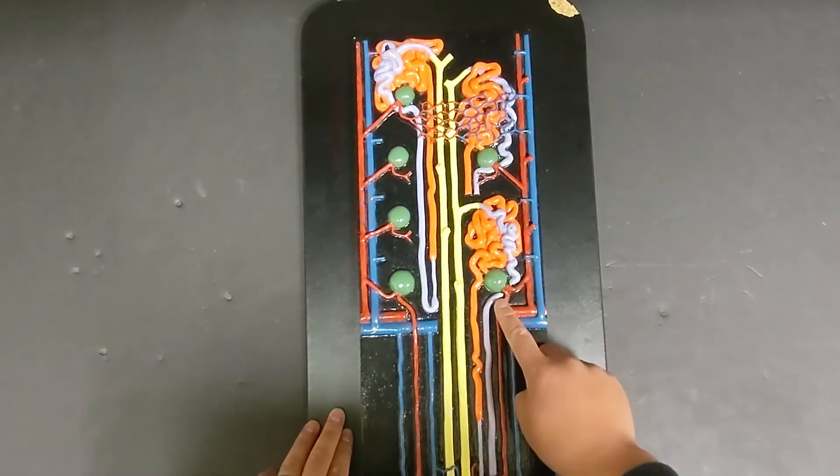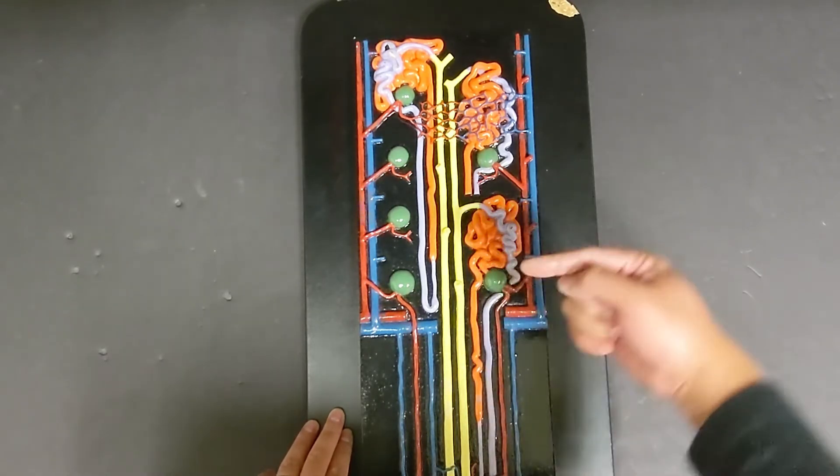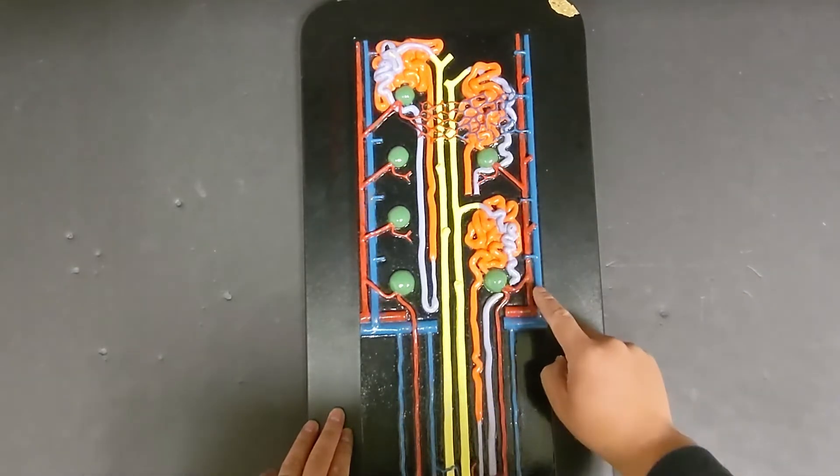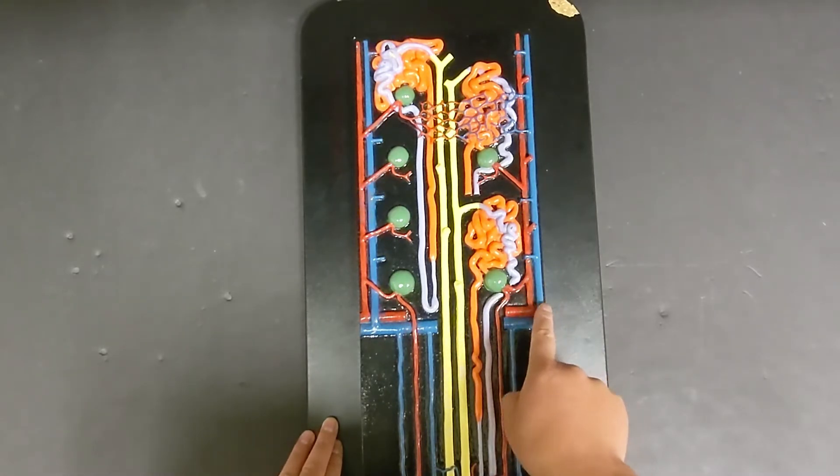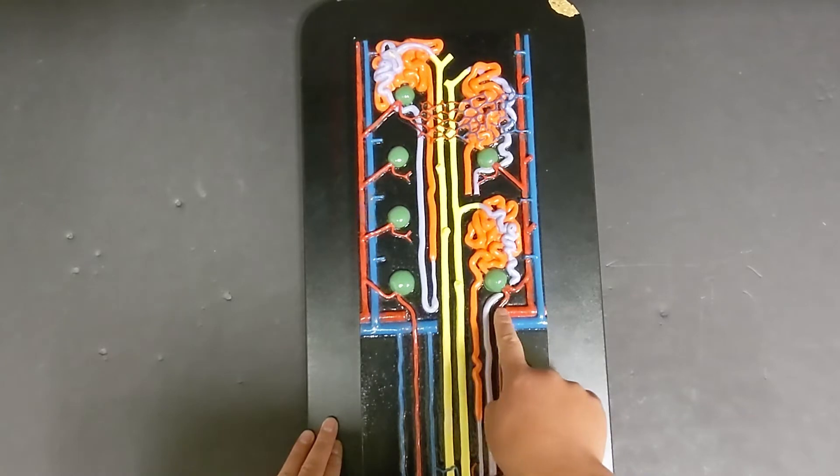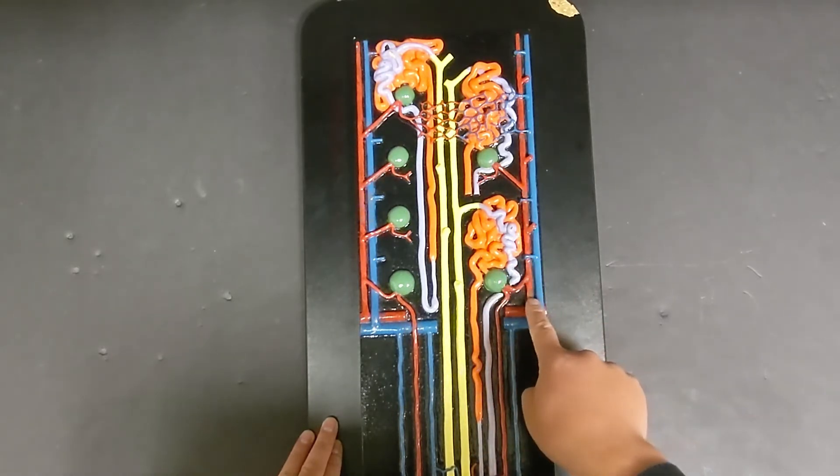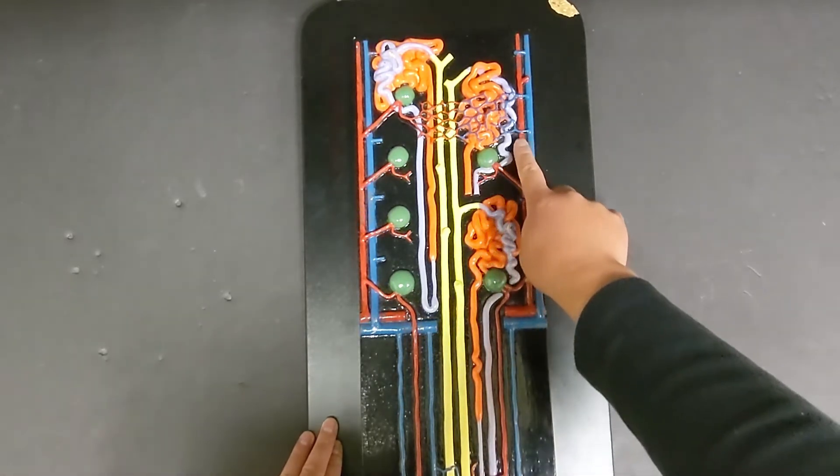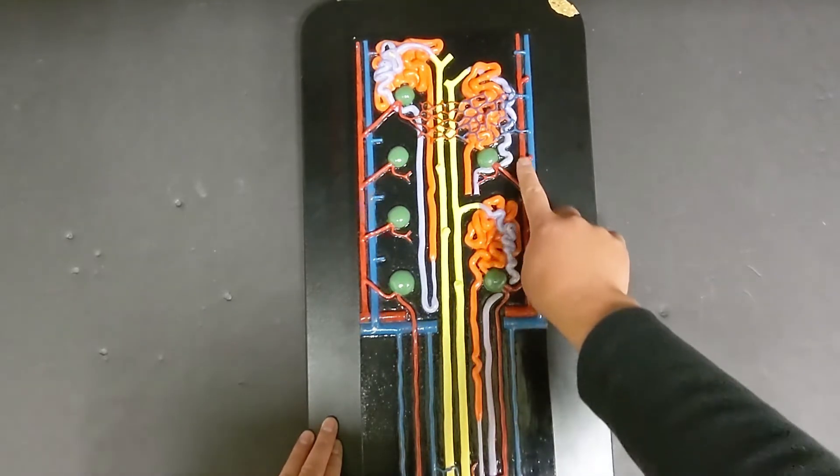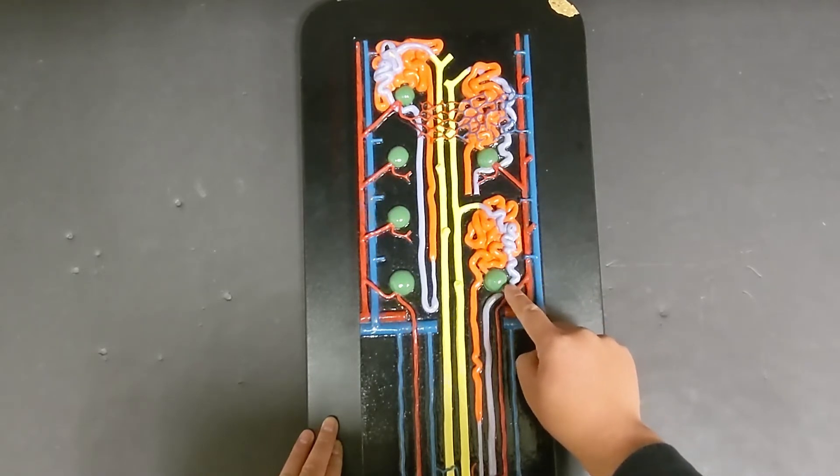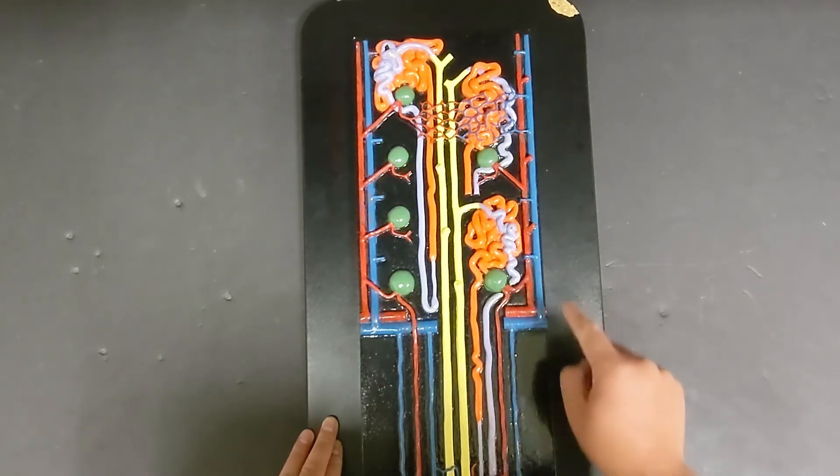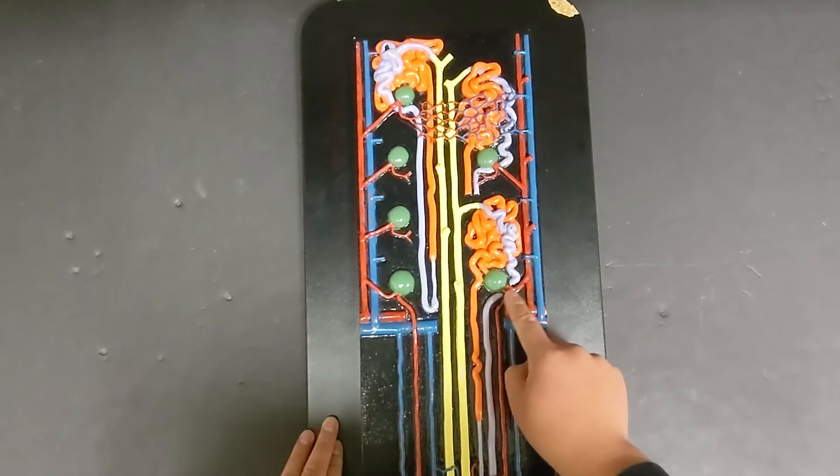So these two are the arterioles, which either bring blood in or out of the glomerulus. And if you look closely, you have these larger blood vessels, these larger arteries that are leading to it. This one is called the arcuate artery, leading to the interlobular artery. So interlobular artery going up into the renal cortex, coming off of the interlobular artery is the afferent arteriole. And then coming out of the glomerulus is going to be the efferent arteriole.